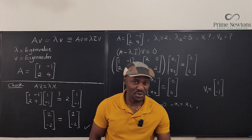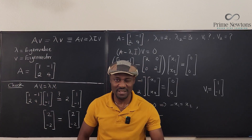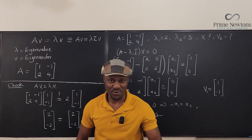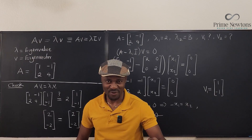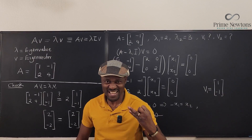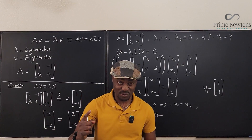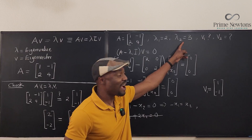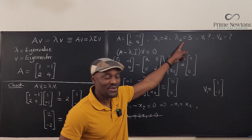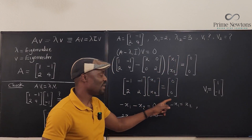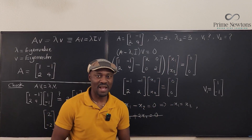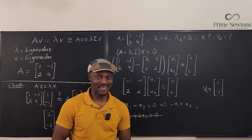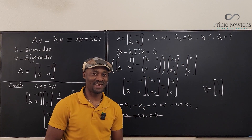Both sides are equal — this is justified because we accurately computed the eigenvalue and found the correct eigenvector for the first one. For the second eigenvalue λ₂ = 3, follow the same process and find its eigenvector. Never stop learning, never stop living. Goodbye!